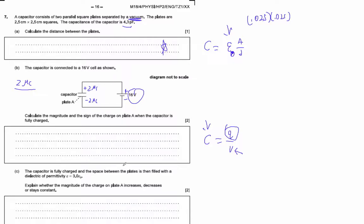The capacitor is fully charged, and the space between the plates is then filled with a dielectric of permittivity 3 times the permittivity of free space. So what's going to happen? Explain whether the magnitude of the charge on plate A increases, decreases, or stays constant.